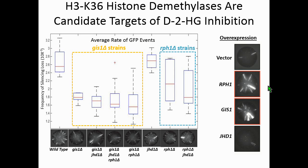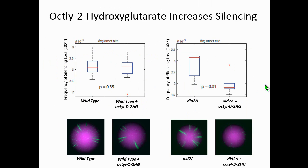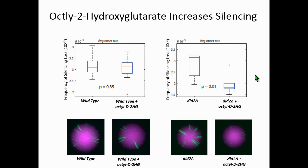What I've shown so far is a strong correlation between accumulation of D2-hydroxyglutarate and an increase in silencing. But to really nail down whether this effect is directly due to D2-hydroxyglutarate, I used a cell-permeable version of the compound—octyl-2-hydroxyglutarate. When I treated cells directly with this compound, in the case where cells are unable to metabolize it due to the dehydrogenase mutation, it has the same effect: it stabilizes silencing further.